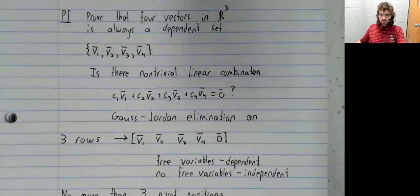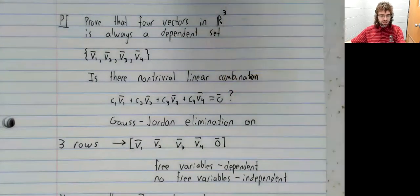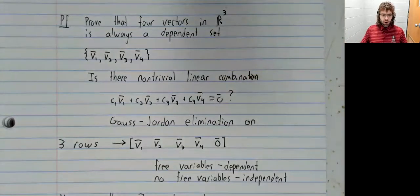So this set of vectors is dependent. And this argument always goes through if we have more than n vectors in Rn.